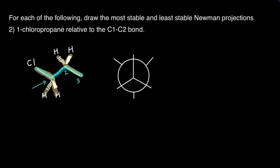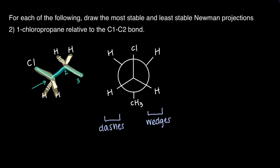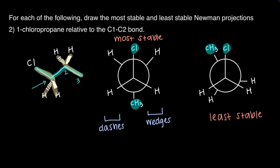When looking down the C1-C2 bond from the right-hand side and rotating the wedge and dash model so we are looking straight down the C1-C2 bond, the wedges will be on the right and the dashes will be on the left. On the front carbon, Cl will be at the top with the H's at the bottom left and bottom right. On the back carbon, the methyl group will be at the bottom with H's at the top left and top right. For the most stable Newman projection, the largest groups — Cl on the front carbon and the methyl group on the back carbon — will be anti to each other in the staggered conformation. For the least stable Newman projection, these two largest groups will be eclipsed in an eclipsed conformation.